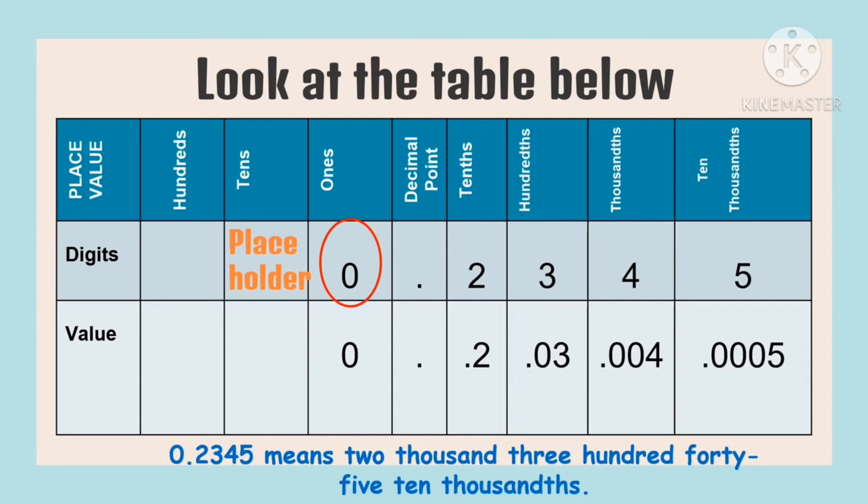We read the number or the decimal number as 0.2345. You'll learn in the next lesson how to read decimal numbers.